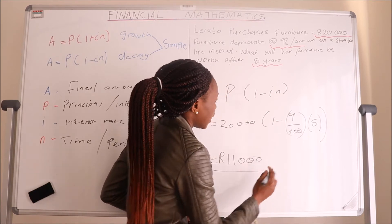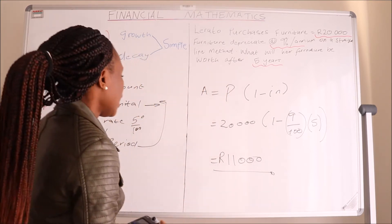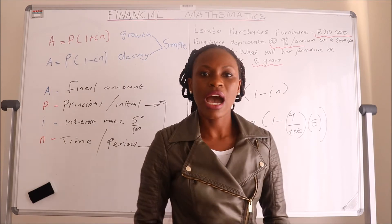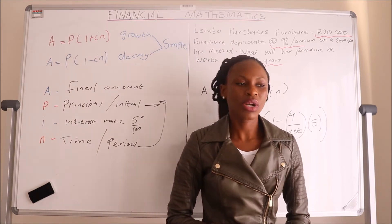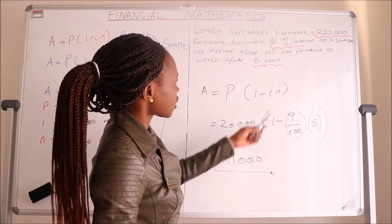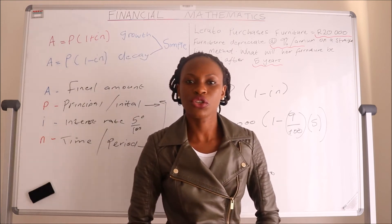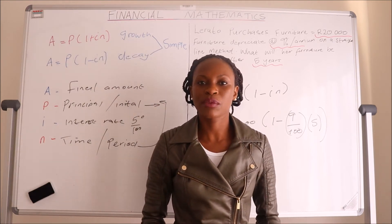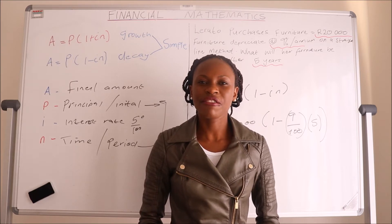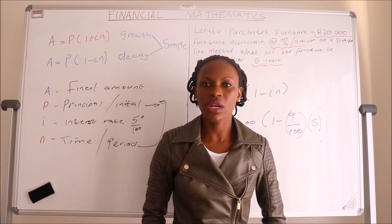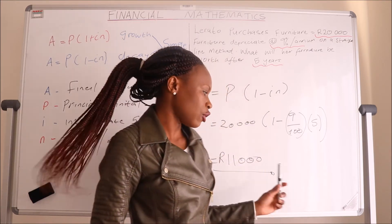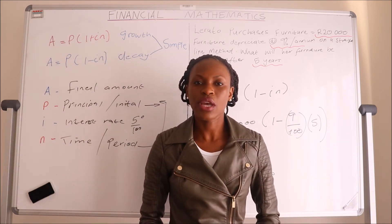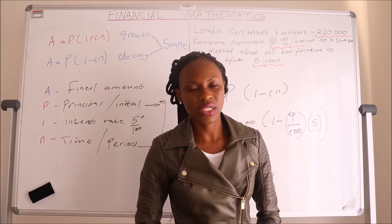So the furniture that she bought will not be worth more than eleven thousand after five years. That means she would have lost nine thousand from the original amount she used to purchase the goods. If she bought couches, for example, after five years she would have to sell those couches at eleven thousand — a difference of nine thousand from the original purchase price.